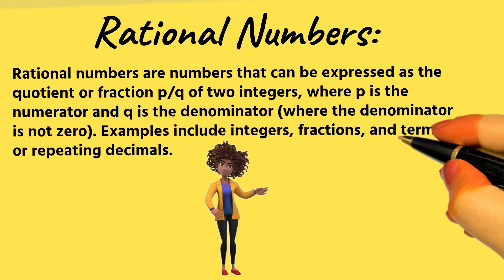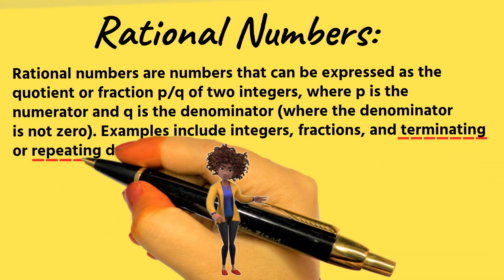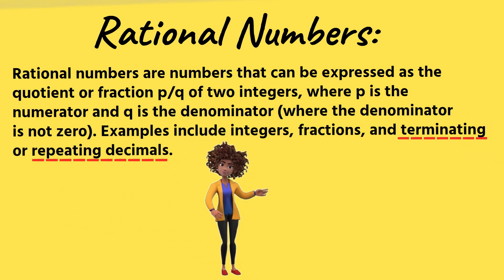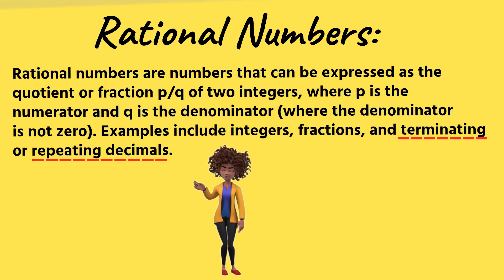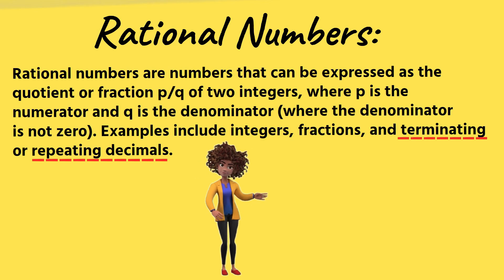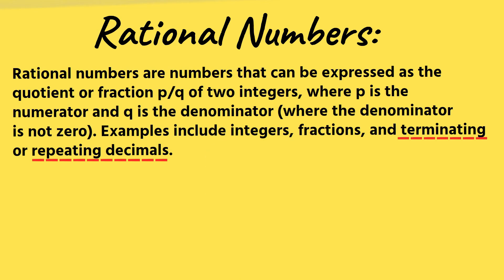Rational numbers are numbers that can be expressed as the quotient or fraction p over q of two integers, where p is the numerator and q is the denominator, and where the denominator is not zero. Examples include integers, fractions, and terminating or repeating decimals.